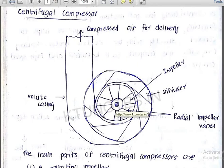The air — which is a fluid — enters and gains high kinetic energy through the rotating vanes. This kinetic energy is increased as the fluid moves through the impeller.